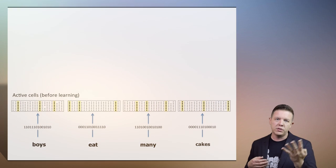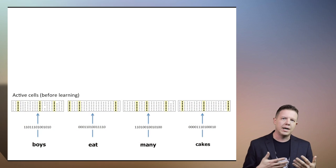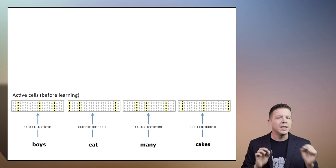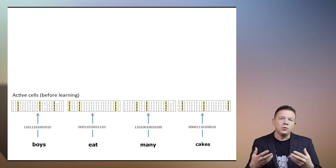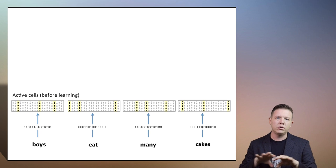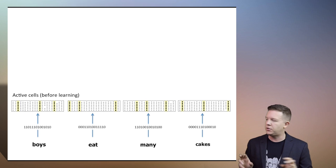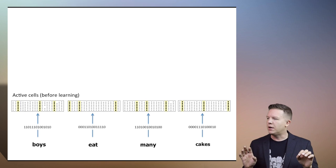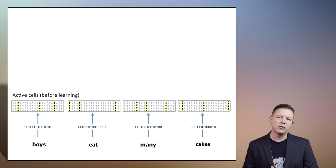So let's say we have a temporal sequence, another four-step sequence, and we're trying to encode the concept 'boys eat many cakes.' Just assume that we have an encoding process that encodes the semantic information for these four words in a way that they're recognizable by the spatial pooler.